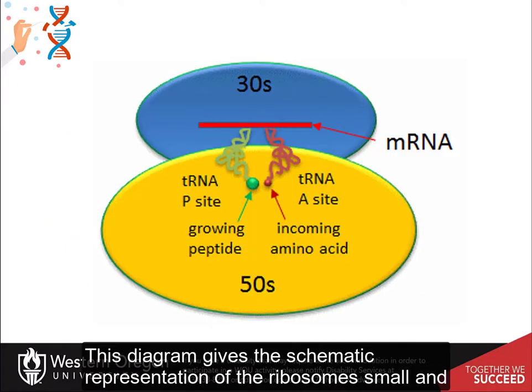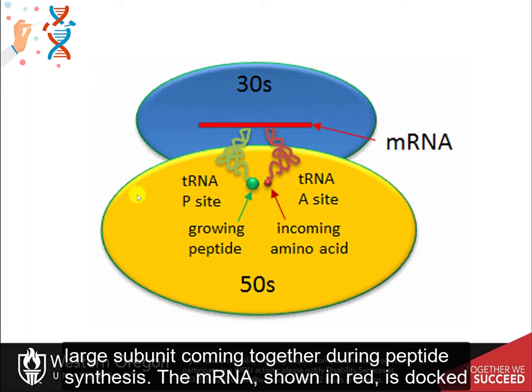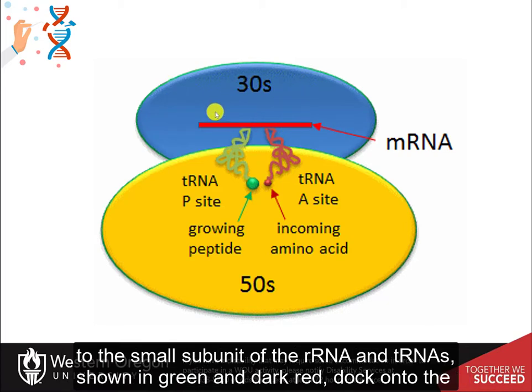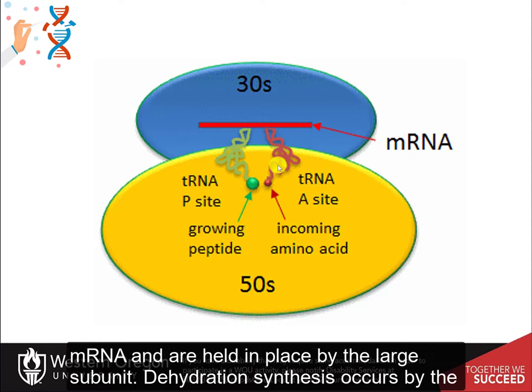This diagram gives a schematic representation of the ribosome's small and large subunits coming together during peptide synthesis. The messenger RNA, shown in red, is docked to the small subunit of the ribosome. Transfer RNAs, shown in green and dark red, dock onto the messenger RNA and are held in place by the large subunit.